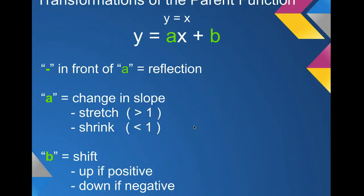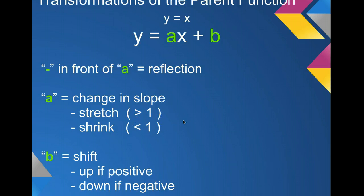If you have a slope that is greater than one — a slope of 2, a slope of 3, even a slope of 3 halves, because that's greater than one — that's considered a stretch. The line will get steeper; it will stretch up.